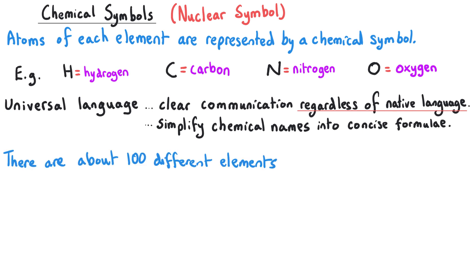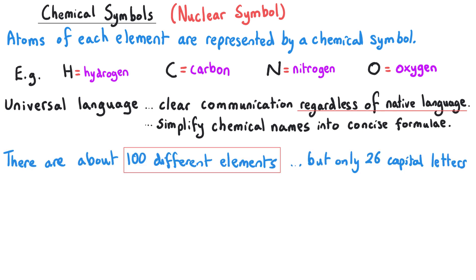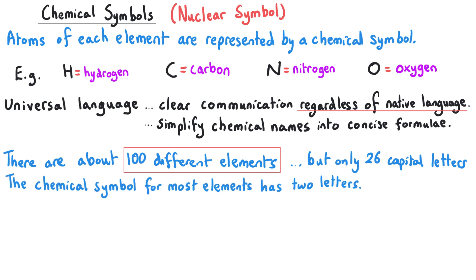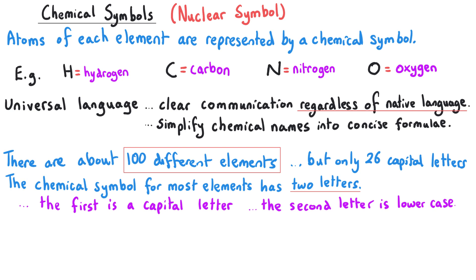There are about 100 different elements but only 26 letters in the alphabet, so most elements have a chemical symbol that uses two letters. There's a really important rule here: the first letter of an element's chemical symbol is always a capital letter, and the second letter is always in lowercase.